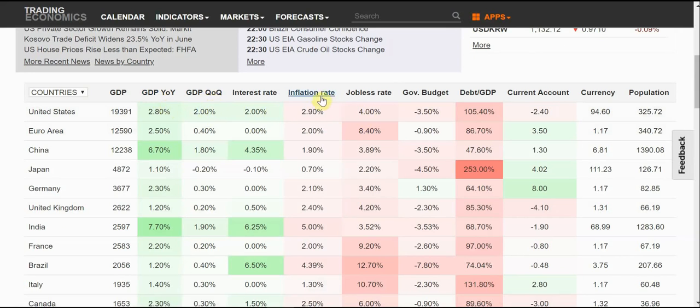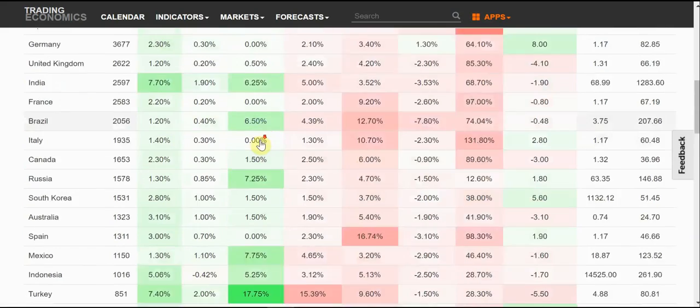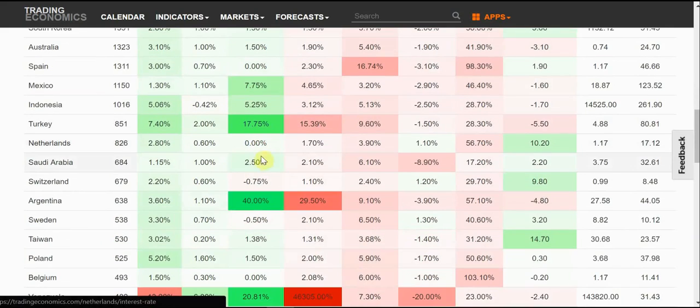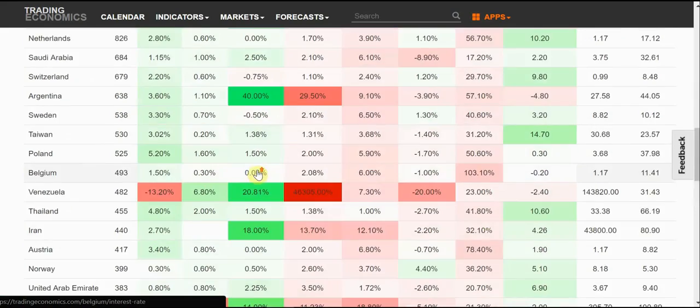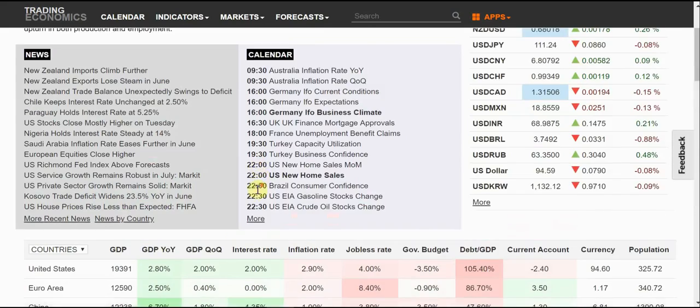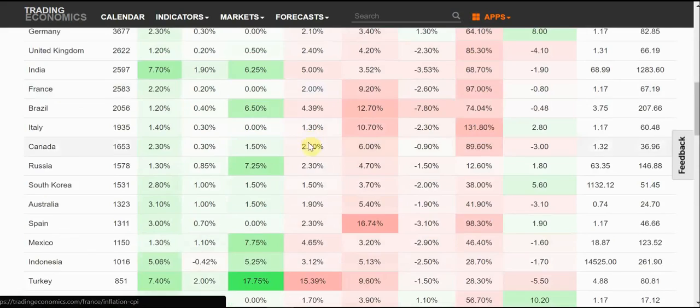Then you have all this interest rate, inflation rate. If you want to compare the interest rate across the country, you can just look at this interest rate and then just scroll down. You can see which country has the highest interest rate and which country has the lowest interest rate. You can see at a glance.